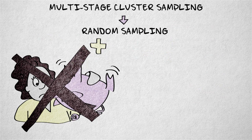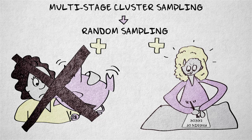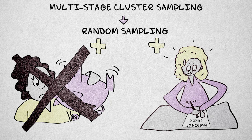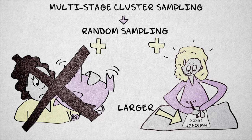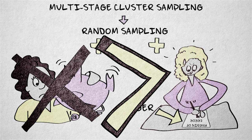Multi-stage cluster sampling makes random sampling feasible, but the margin of error is harder to determine because the probability to be included in the sample is no longer the same for all elements, like it was with simple random sampling. Also, cluster sampling is usually associated with a larger margin of error, even if stratified sampling is used to increase efficiency. However, these disadvantages are generally more than outweighed by the reduction in cost and effort.